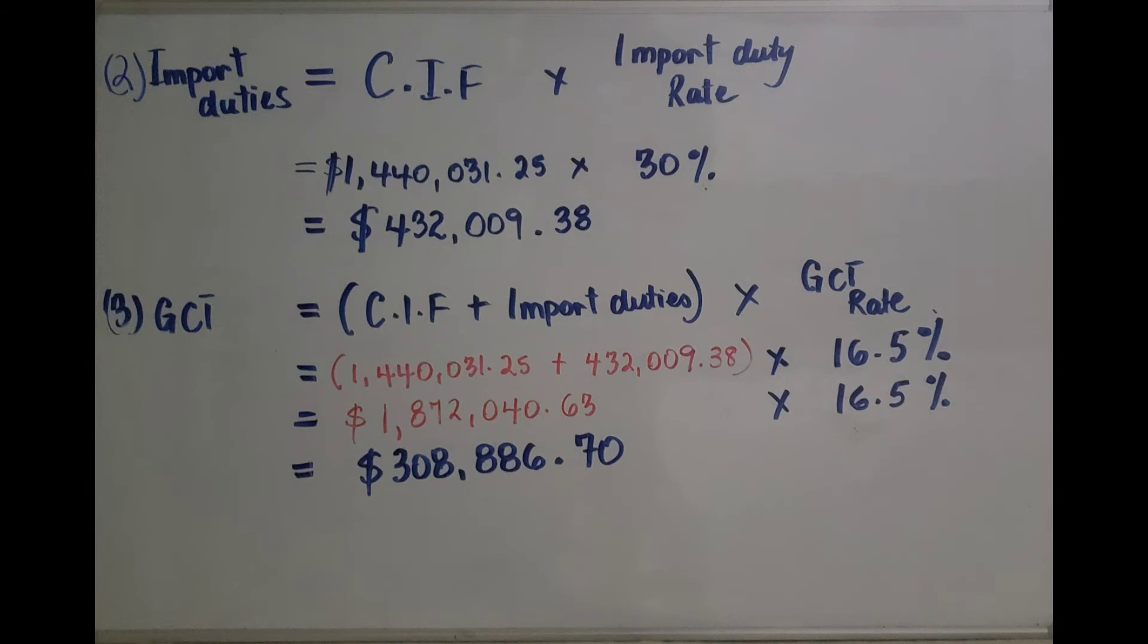Now, let's calculate the import duties. Import duties equals the cost insurance freight multiplied by the import duty rate. The import duty rate is in the question. All we have to do is put the CIF in Jamaican dollars that we just worked out and multiply by the 30% import duty rate and you will get $432,009.38.